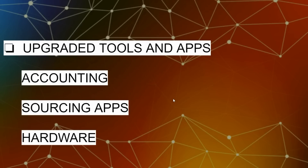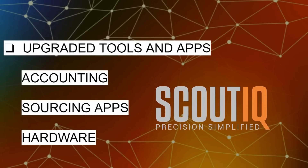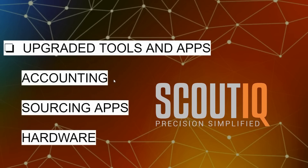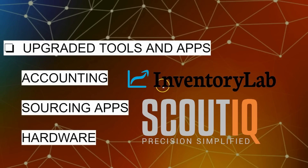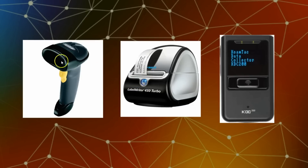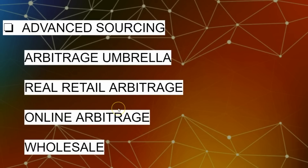The next upgrade is your sourcing app. The Amazon seller app is good but doesn't present information concisely or completely. A dedicated sourcing app like Scout IQ — my preferred app — is much better. Other options include FBA Scan, Profit Bandit, and Scoutify, which comes free with Inventory Lab. For hardware, you'll want a Bluetooth scanner for home use, a Dymo LabelWriter 450 Turbo, and a KDC 200i Bluetooth scanner for your phone.